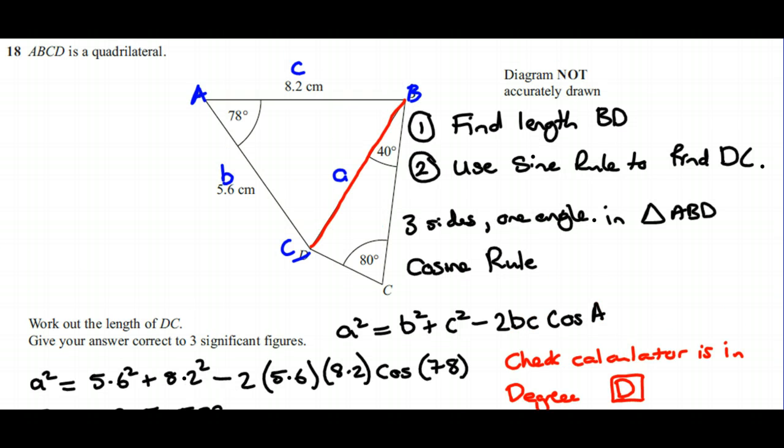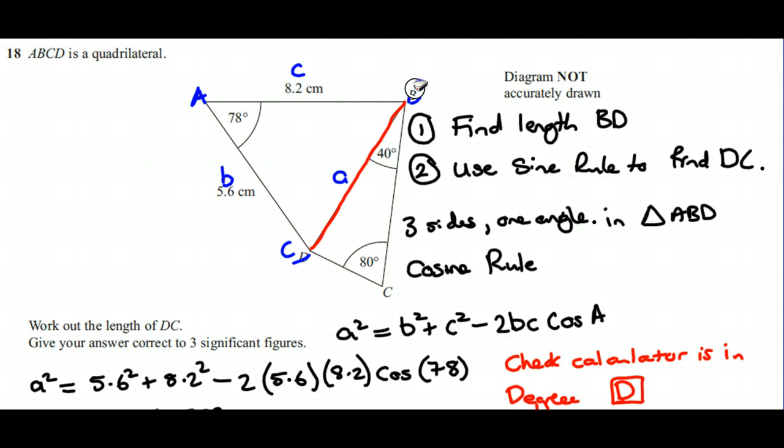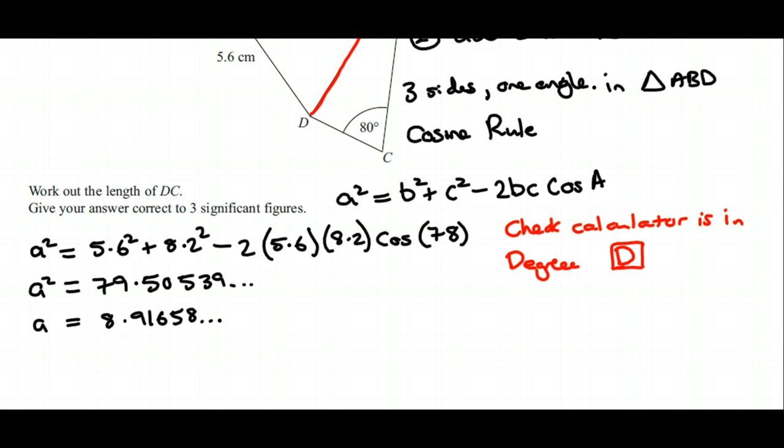Just to put it back in the context of the question, now that I've used those ones I'll rub them out to avoid any confusion. I've got BD, so it turns out that BD is 8.91658.